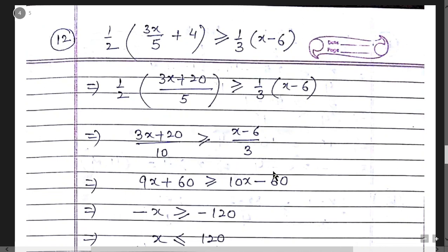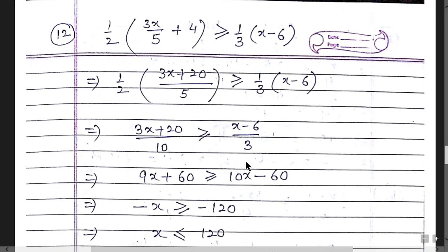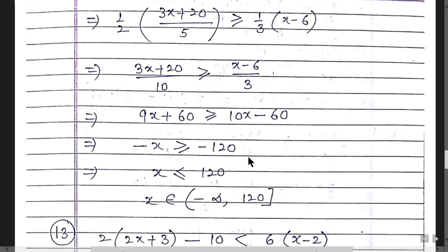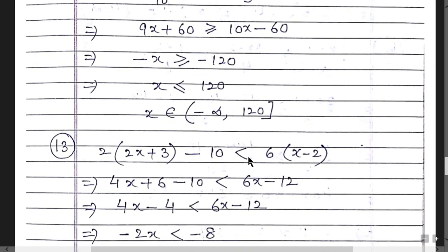Question 12 is similar. Take LCM, then cross-multiply: 2 × 5 = 10. This gives 9x + 60 and 10x - 60. Simplifying: 9x - 10x = -x and -60 - 60 = -120, so x ≤ 120. The answer is (-∞, 120], with a closed bracket.